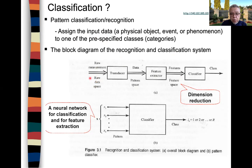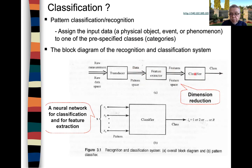Let's say we have raw data and a transducer. In the case of computer vision, we have a camera. So we have a scene, a camera, and this data — which are pixels or images — from which we extract features. Then we perform classification in the feature space. Feature extraction performs some sort of dimensionality reduction, so that instead of working straight with the pixels or images to perform classification, we ideally extract some features.